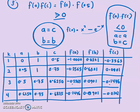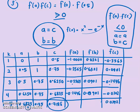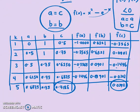For the fifth iteration: F(A) × F(C) is again greater than 0, so A becomes C = 0.6875, B remains the same. C = (A + B)/2, and F(C) = 0.0292. We stop the iteration here after 5 iterations, and this C value is our approximate root.